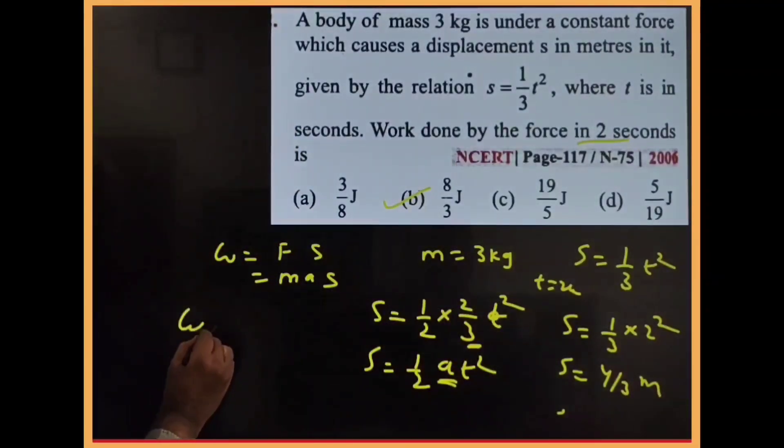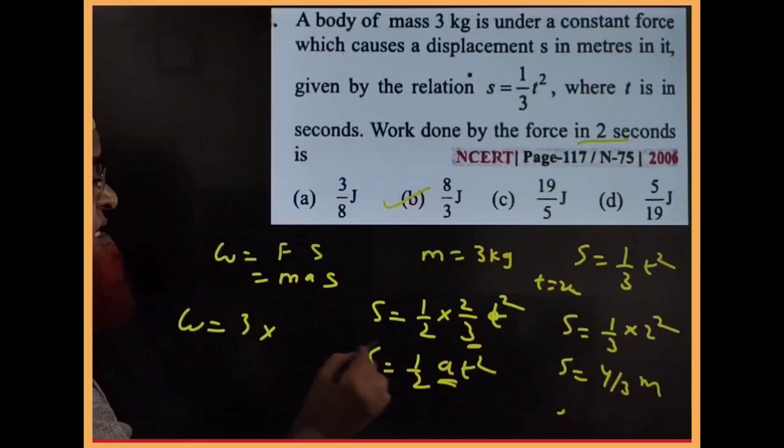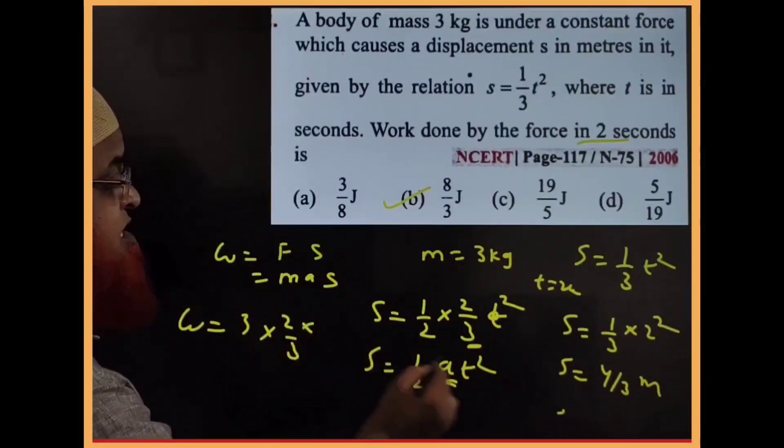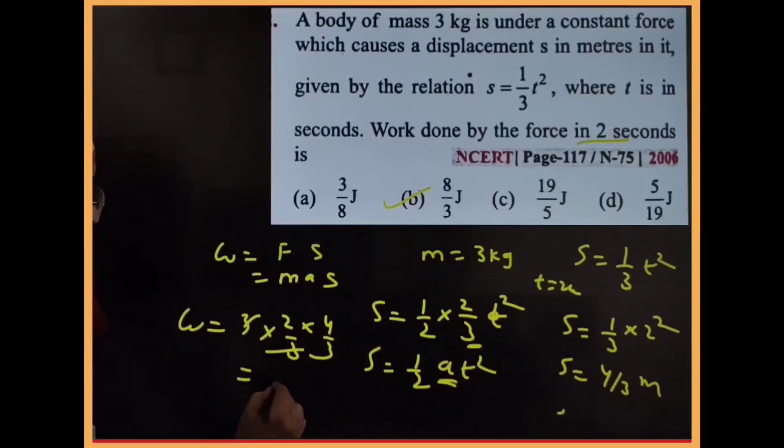You can directly substitute here. Now W = mass × a × s = 3 × (2/3) × (4/3). This gets cancelled, and your answer is 8/3 joules. This simple method, that's it dear students.